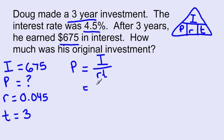I'll plug in what I know. I is 675. My R is 0.045. And my T is 3.